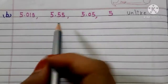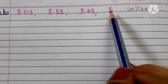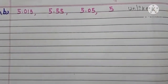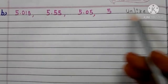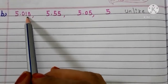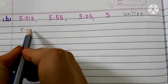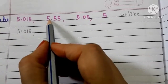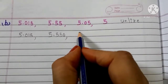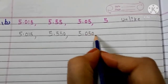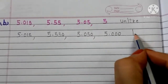Let us go to another example. Here we have 5.015, 5.55, 5.05, and 5. These are unlike decimals. First we have to convert them into like decimals. Here 5.015 has 3 decimal places. So copy down 5.015, write 5.55 as 5.550, write 5.05 as 5.050, and write 5 as 5.000. Now these decimals are like decimals.